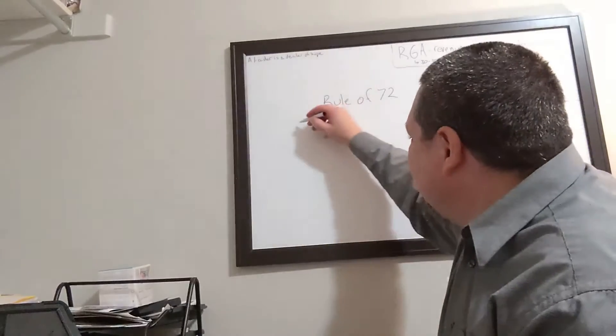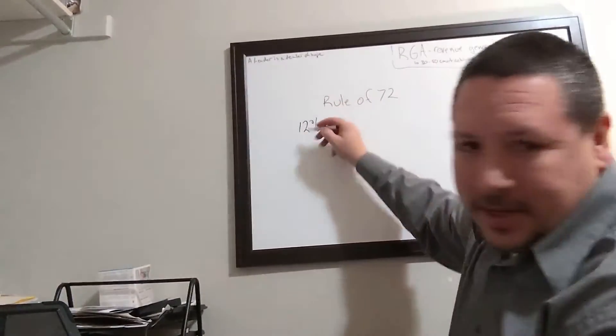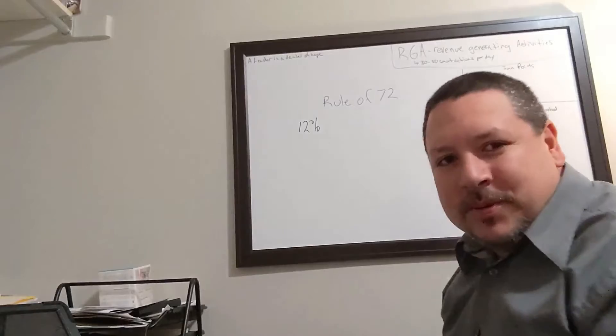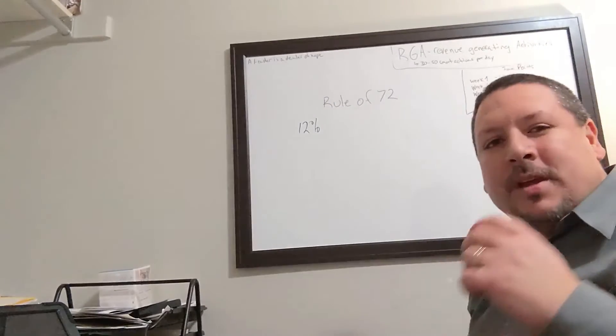Let's do one more: 12%. Now you might be thinking there's no way you could ever get 12%, but you can get double-digit numbers.